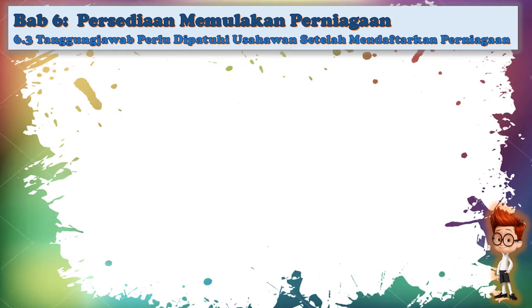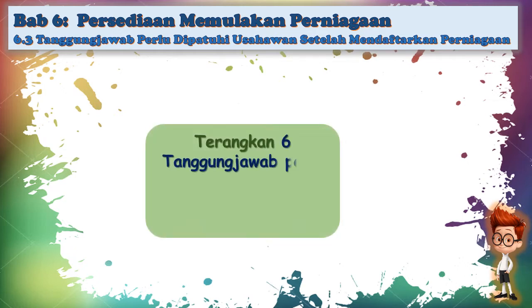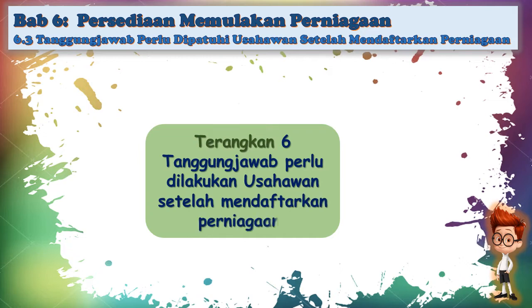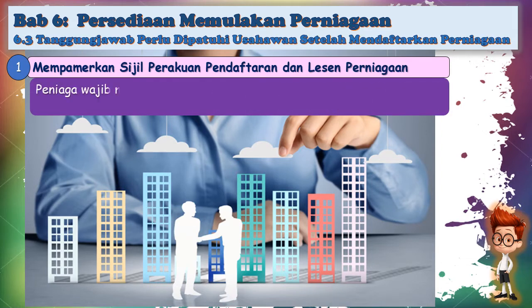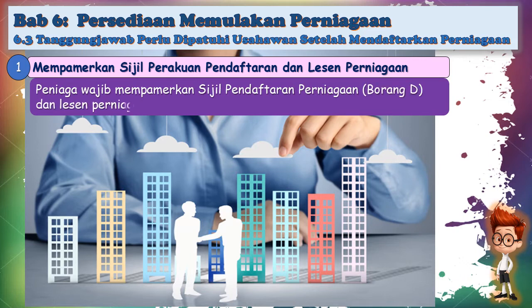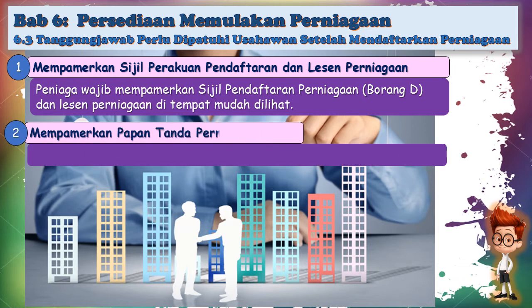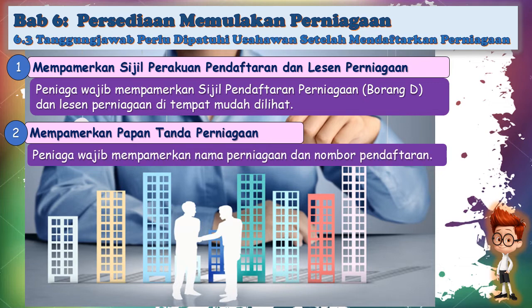Enam poin tiga: tanggungjawab perlu dipatuhi usahawan setelah mendaftarkan perniagaan. Yang pertama sekali, usahawan perlu mempamerkan sijil perakuan pendaftaran dan lesen perniagaan. Peniaga wajib mempamerkan sijil pendaftaran perniagaan iaitu borang D dan lesen perniagaan di tempat yang mudah dilihat dalam perniagaan. Yang kedua, tanggungjawab mempamerkan papan tanda perniagaan — peniaga wajib mempamerkan nama perniagaan dan nombor pendaftaran perniagaan.